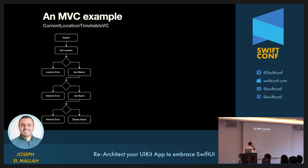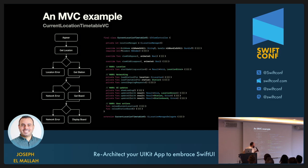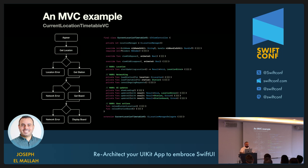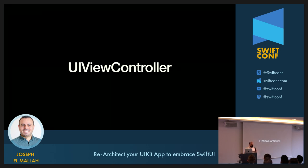Looking at the data flow: once we appear, we try to get the location. If everything goes well, we get the station. If that works, we get the board, and if everything goes well, we display it to the user. This translated into — my best effort to keep it on one slide, omitting a lot of code. If you can see, the view controller needs to deal with location, fetching and location updates, networking, UI updates, and user actions. This is not less than a 600–700 line code file. A lot of people tried to mitigate that with different architectures.